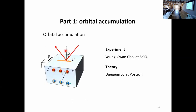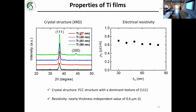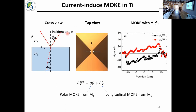The first experimental part is orbital accumulation on the top surface. This work is mostly performed by the student, and the theory is done by the collaborating group. First, I'd like to talk about the film structure. When I measure the crystal structure of the titanium film, it has mostly 1×1 texture with FCC with a small component of additional texture. The electrical resistivity almost does not depend on thickness, staying around 7.6 micro-ohm per meter. In the cross-view, we inject light at an oblique angle onto the titanium channel with a width around 20 micrometers, scanning in the x direction, and the y-component of magnetization accumulated on the surface is measured.